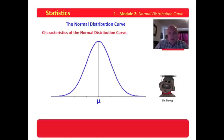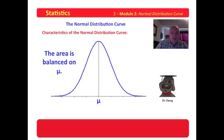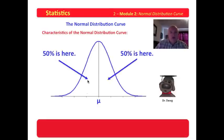The normal distribution curve has other characteristics than just being centered on the mean. 100% of the area is under the curve, and it is balanced on the mean. 50% is on one side, and 50% is on the other side. So 100% of the area is under the curve: 50% is less than the mean, and 50% is above the mean.